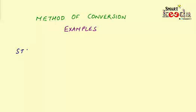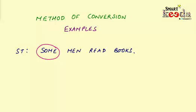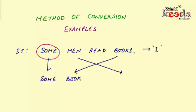The first statement is: 'Some men read books.' Here you can see that not all but only some men are being referred to, which means it's of a particular kind, and as the statement has no negative inferences, we can say that it's an I-type statement. While converting an I-type statement, the quantifier 'some' will remain the same and the classes 'men' and 'books' will get interchanged.